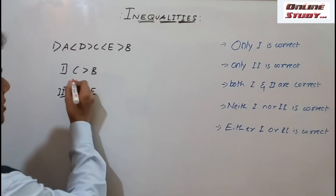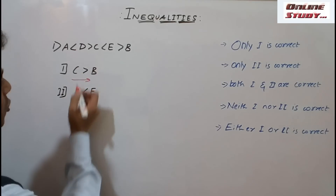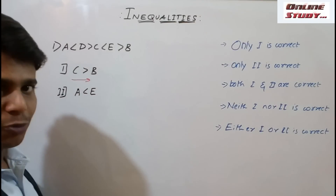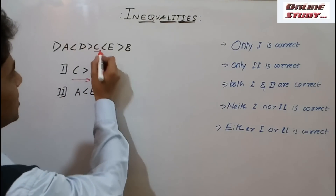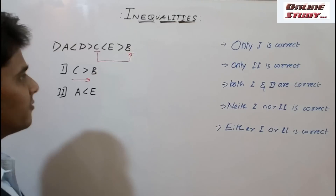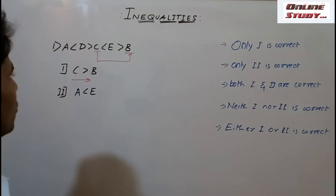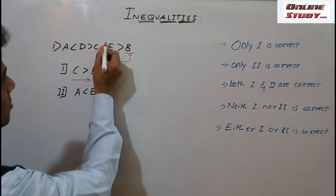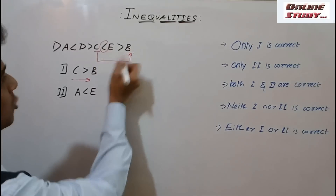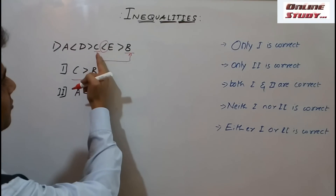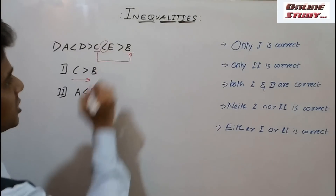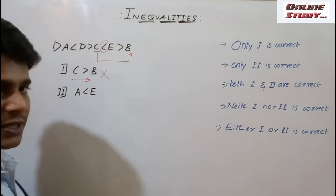In the first conclusion, we need to move from C to B because the gate is open at C. In the statement, C is here and B is here. We will check whether we can move. From C to E, it is not possible because the gate is closed. Since we cannot move from C to E, we cannot move from C to B either. So this conclusion fails.